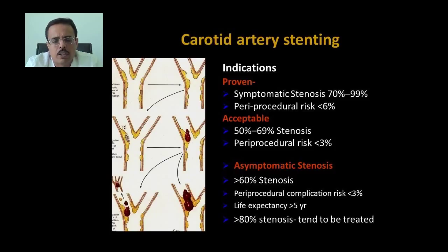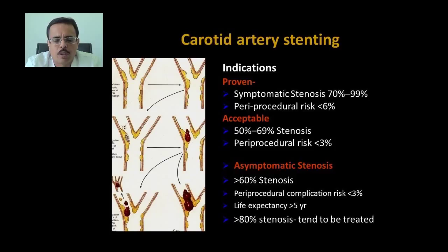How does carotid artery stenosis cause symptoms? There is a plaque deposited in the artery, which ruptures and small emboli travel from the plaque. Sometimes a large embolus can occlude the intracranial artery to cause a stroke. Further progression involves clot formation over the plaque that occludes the artery completely.